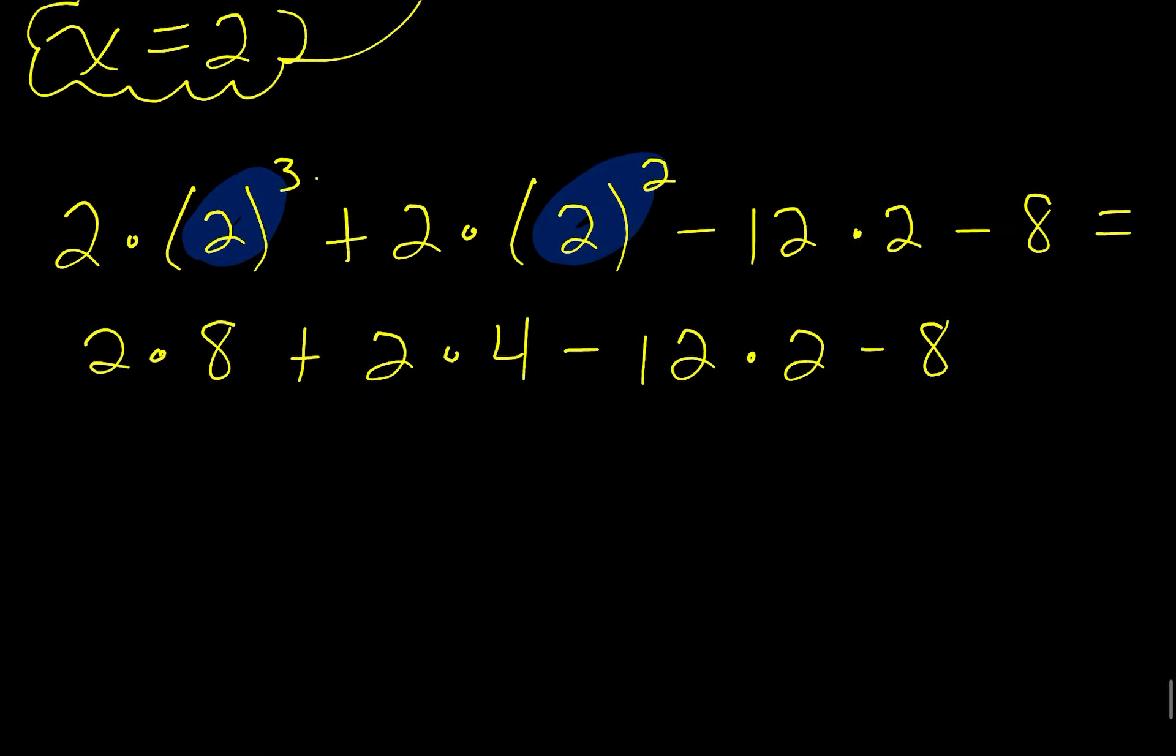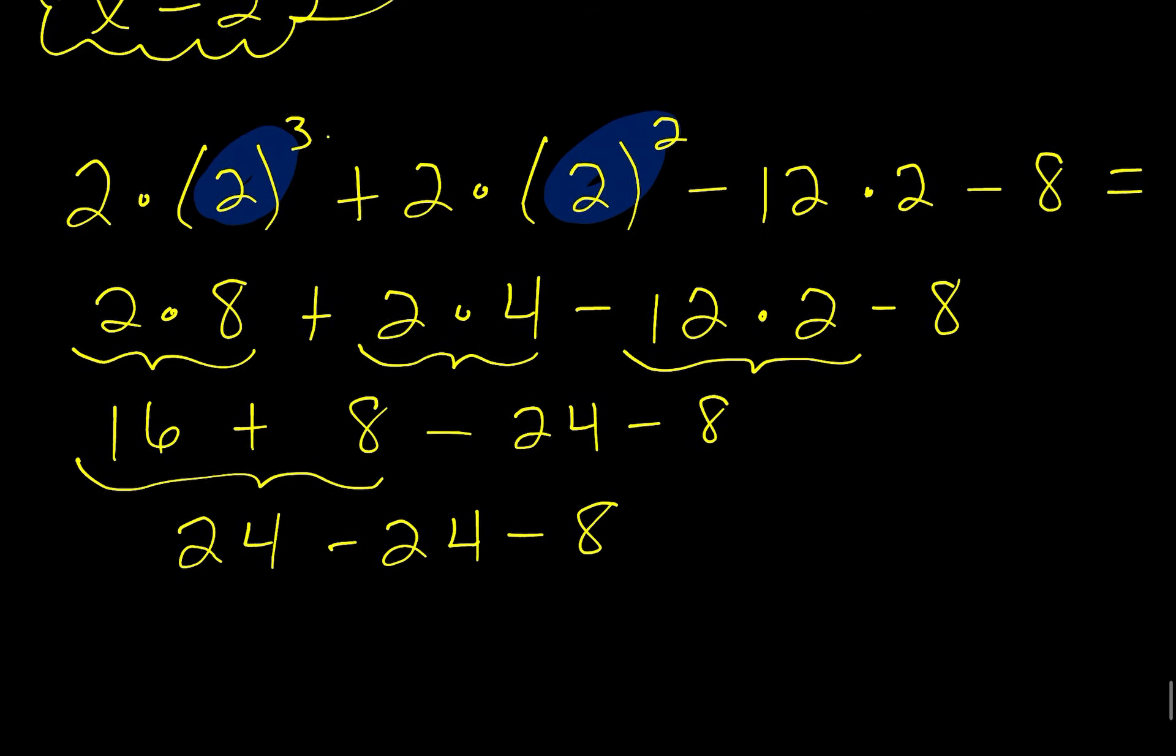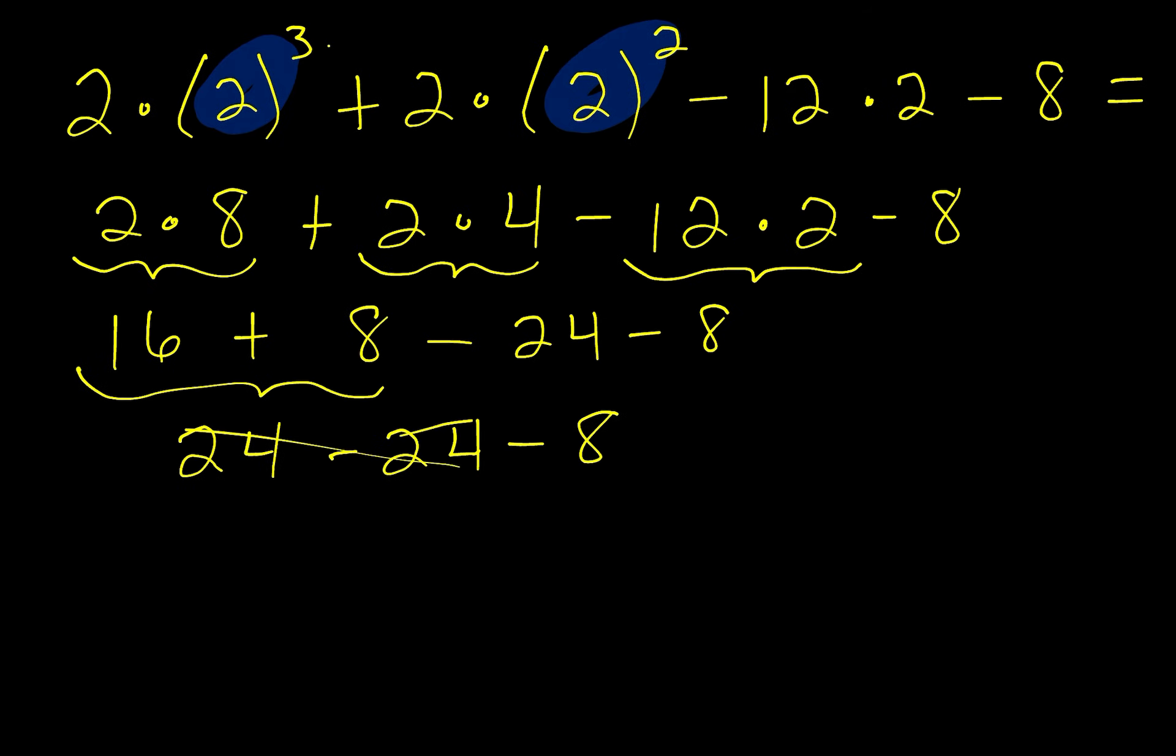All right. Let's jump over to multiply. We're going to multiply here. 2 times 8 is 16. Plus, we're going to multiply here. 2 times 4 is 8. Minus 2 times 12. Negative 12 is negative 24. That's why we're subtracting. Minus 8. 16 plus 8 is 24. Bring down what you have left. 24 minus 24 is going to cancel. And you can see here that we're left with a remainder of negative 8.